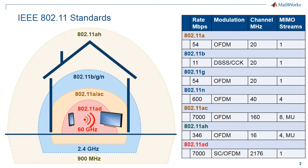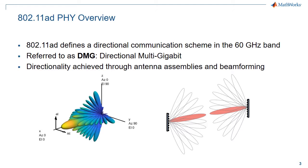802.11ad is intended for high data, short range communications — for example, streaming video between a phone and TV. It operates in the 60 GHz band where plenty of bandwidth is available, allowing for throughput up to 6.9 Gbps over a single spatial stream. Within the standard documents it is referred to as DMG, which is the terminology used within Wireless LAN System Toolbox.